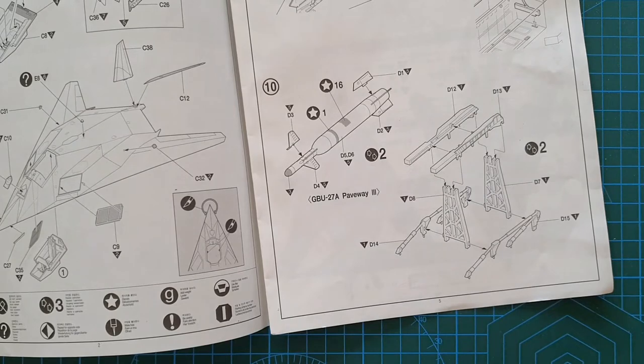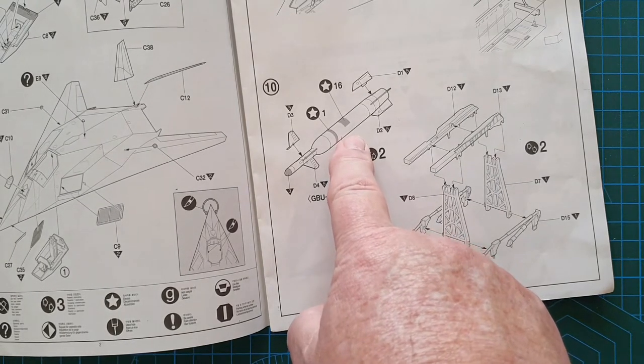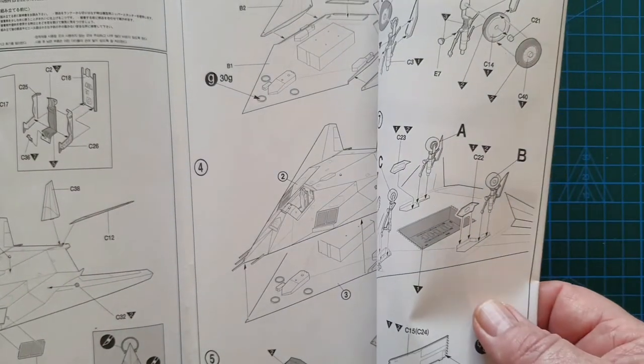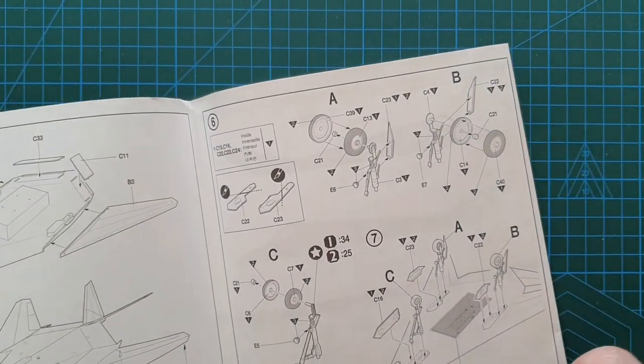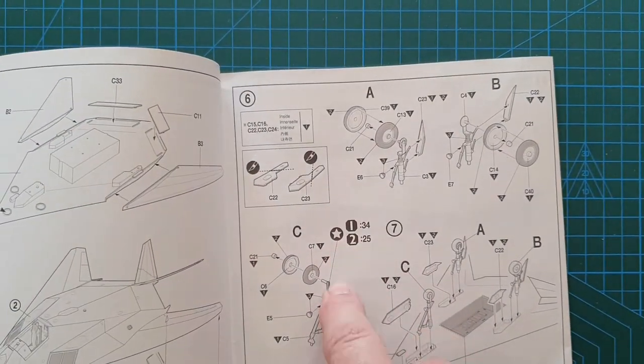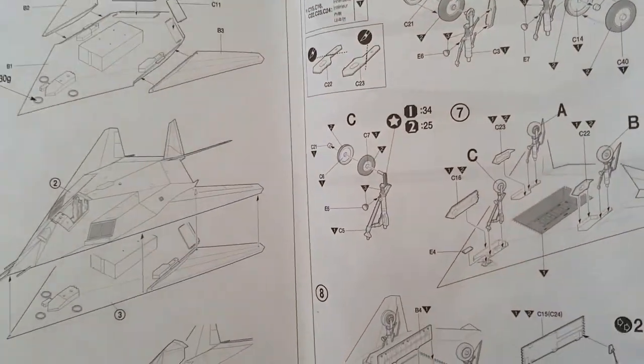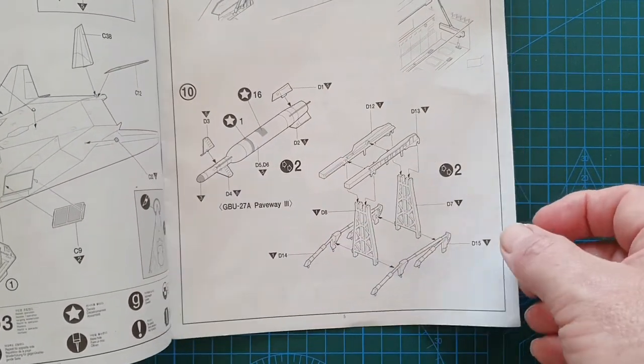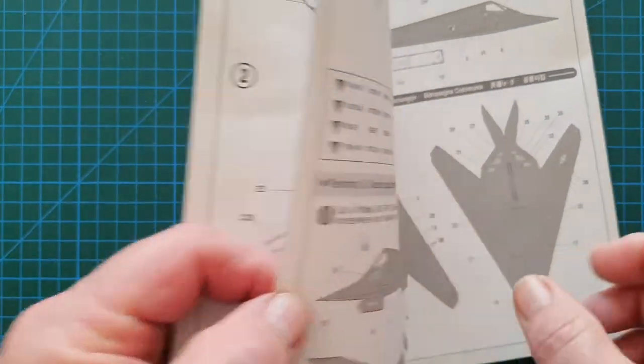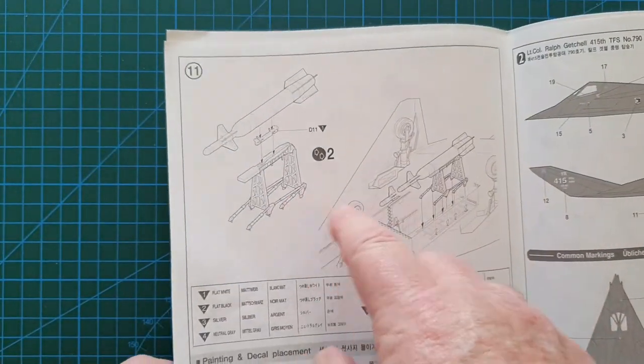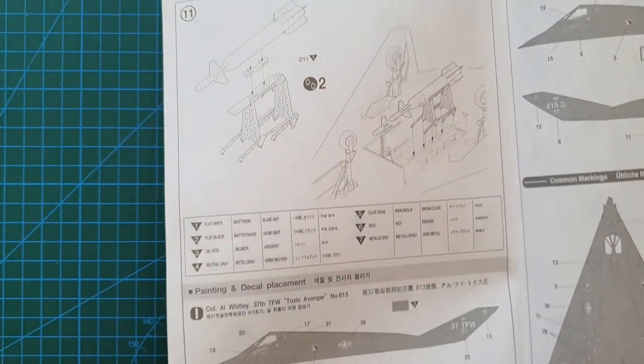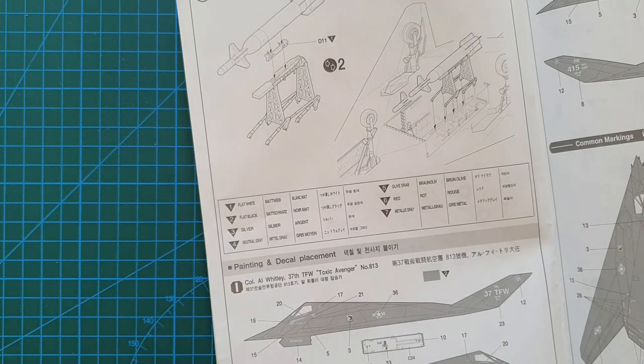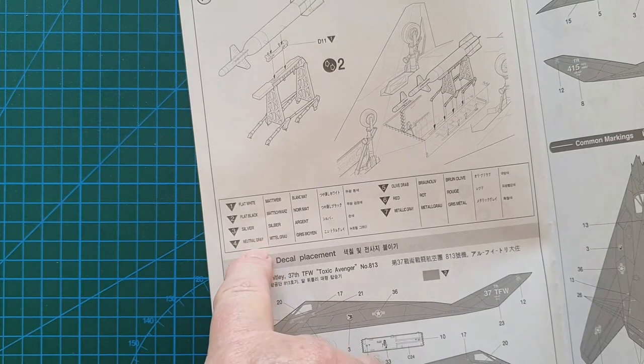Then you get to your GBUs going together. It does have color callouts throughout. You do also have decals which go on your GBUs, and there are also decals going on your undercarriage leg for the nose wheel. Then you've just got your bomb racks going together, fairly straightforward, it's all white. And then your GBUs go on the bomb rack and the bomb rack goes in the bomb bay.